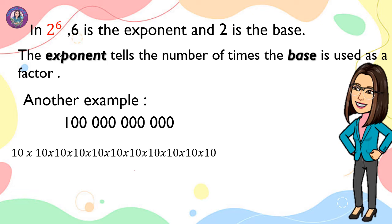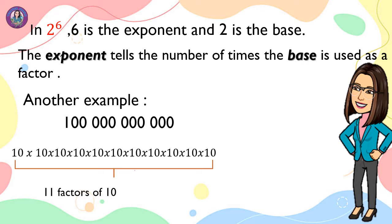10 times 10 times 10 times 10 times 10 times 10 times 10 times 10 times 10 times 10 times 10 times 10 times 10 times 10. We have 11 factors of 10, that is equal to 10 raised to the 11th power. 10 is called the base and 11 is called the exponent.